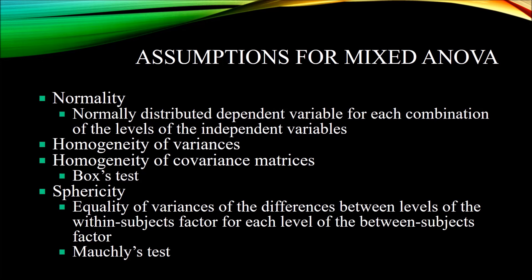The next assumption is homogeneity of variances. Like the assumption of normality, you have to consider this for each combination of the levels of the independent variables. Homogeneity of variances is often tested with Levene's test, and the alpha is typically 0.05. If you have a p-value of less than 0.05, you would assume you have violated the assumption of homogeneity of variances; a p-value greater than 0.05 means you have met that assumption.